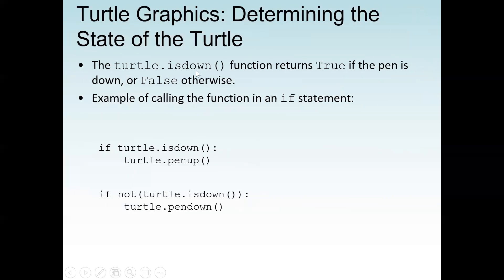The turtle.isdown() function returns true if the pen is down, otherwise it returns false. When the pen is up we cannot write; when the pen is down we can write. An example in an if statement: if turtle.isdown() — meaning the pen is down — we call turtle.penup(). If not turtle.isdown() — meaning the pen is not down — then we call turtle.pendown().